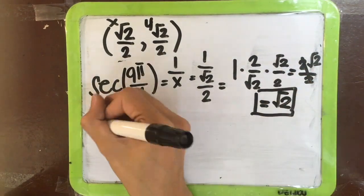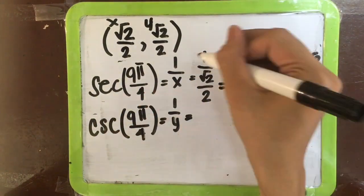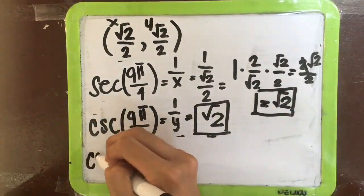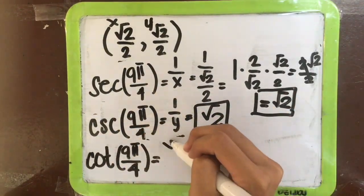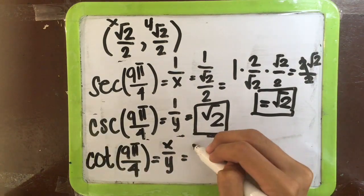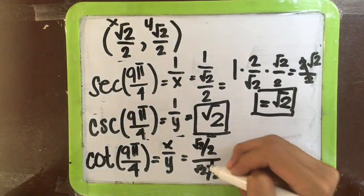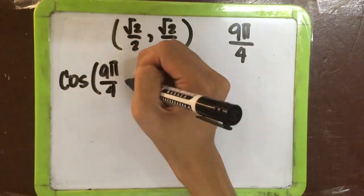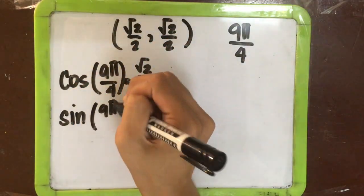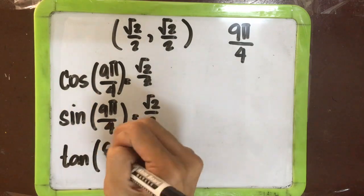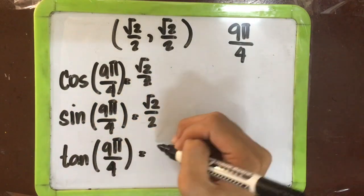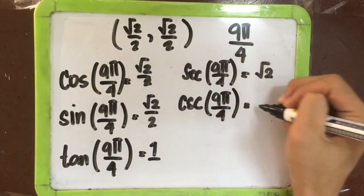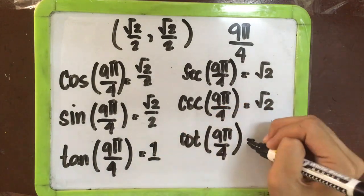For cosecant, it equals 1 over y, so its answer is √2. For cotangent, it equals the reciprocal of y over x, so its answer is also 1. Summary: cosine equals √2 over 2, sine equals √2 over 2, tangent equals 1, secant equals √2, cosecant equals √2, and cotangent equals 1.